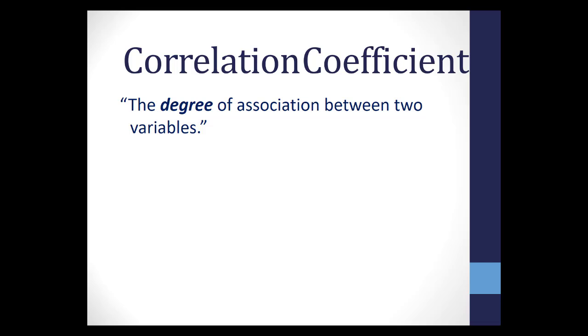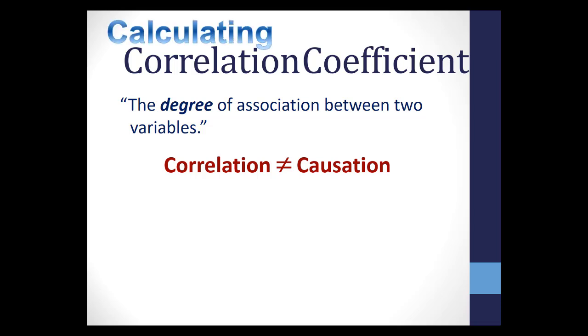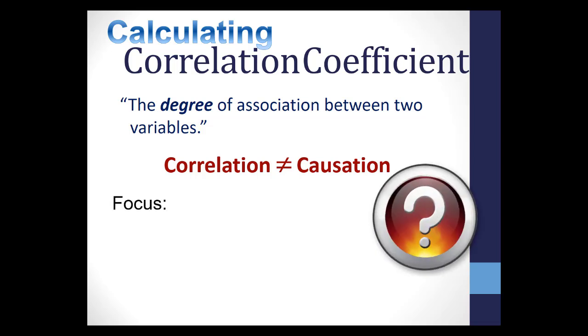If you understand the concept of correlation as being an association between two variables and how it should not be confused with causation, it's now time to learn to calculate Pearson's R, also known as the correlation coefficient. That's what this video will focus on, how to calculate Pearson's R correlation coefficient. Once you've calculated Pearson's R, it is just one more simple step to calculate Pearson's R squared, or the coefficient of determination.